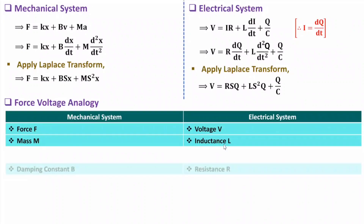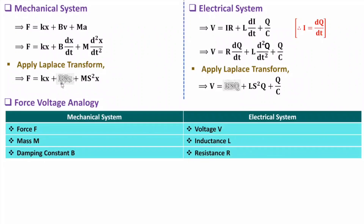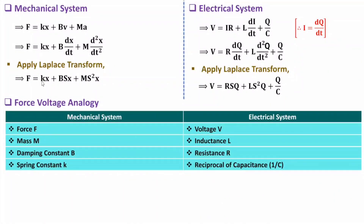Next, observing damping constant b: it appears with the s term in the mechanical equation, and resistance R appears with the s term in the electrical equation. So damping constant b is equivalent to resistance R. For spring constant k: it has no s terms in the mechanical equation, and the corresponding term in the electrical equation is 1/C (also without s). So spring constant k is equivalent to 1/C, the reciprocal of capacitance.